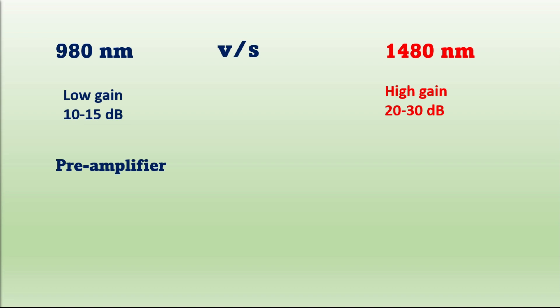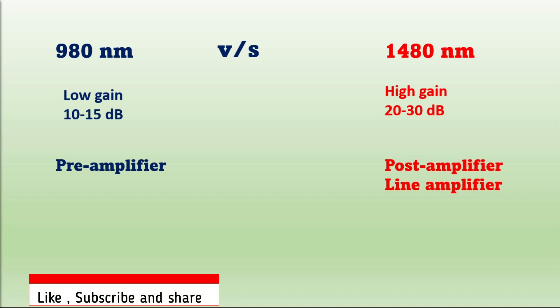980 nanometers amplifier preferred to use as preamplifier means near to receiver. 1480 nanometers amplifier preferred to use as post amplifier and line amplifier means near to transmitter and mid amplifier site.